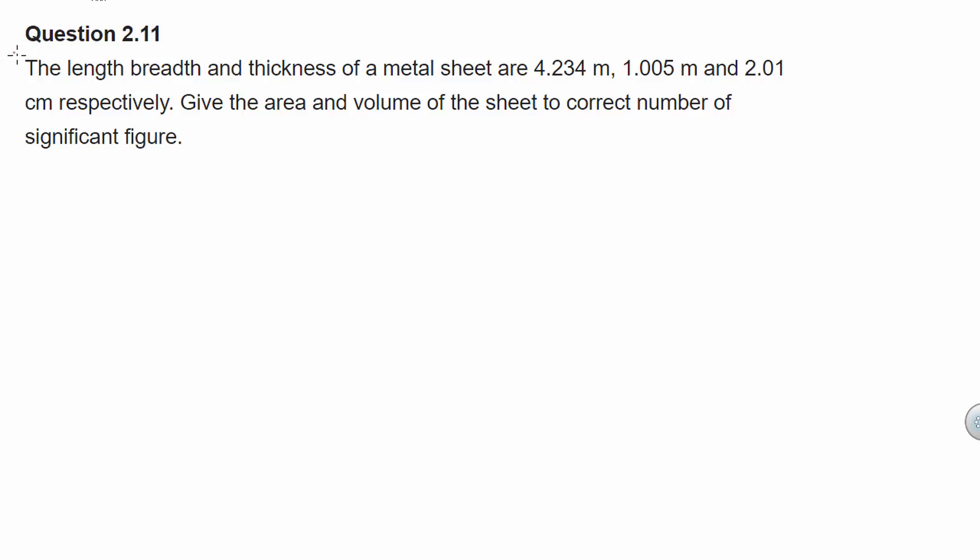Hello and welcome to physicscatalyst.com. Let us now begin with our question. Our question states that the length, breadth and thickness of a metal sheet are 4.234 m, 1.005 m and 2.01 cm respectively. Give the area and volume of the sheet to correct number of significant figures.